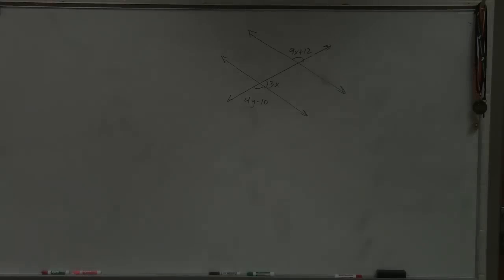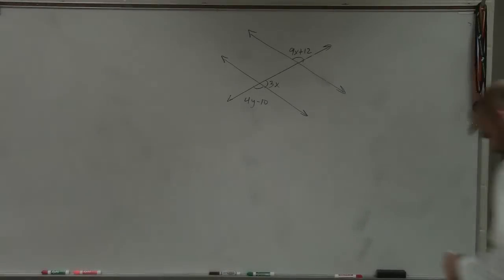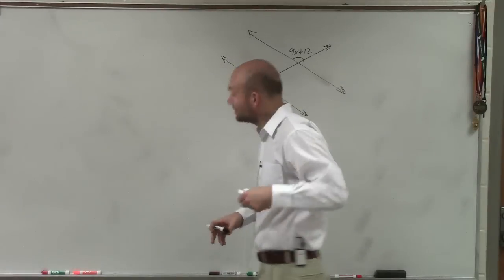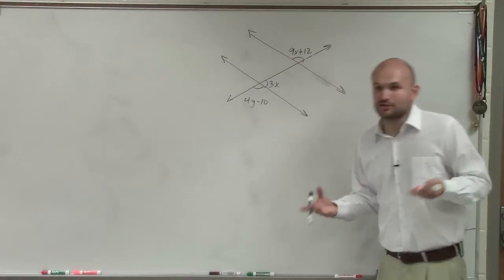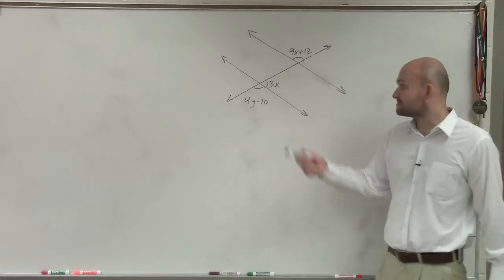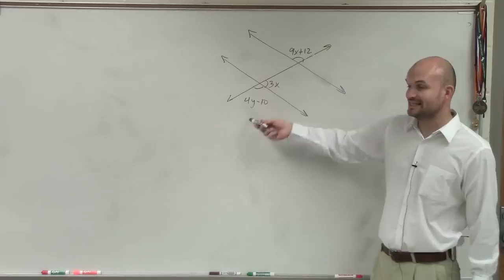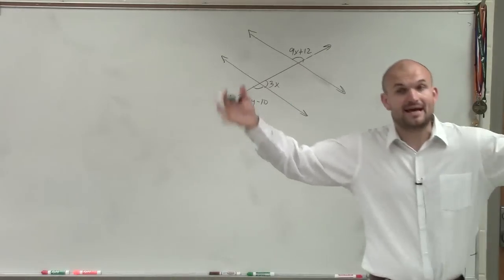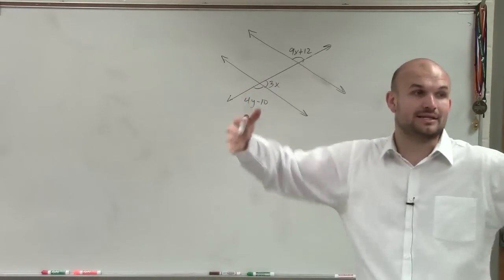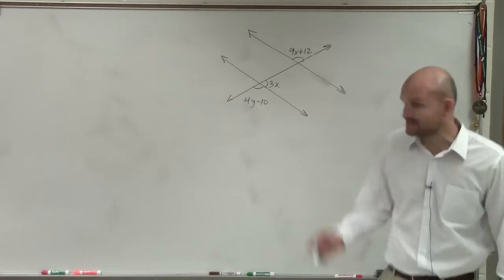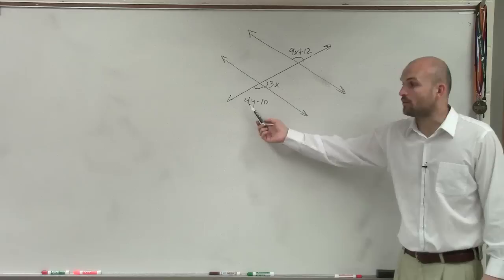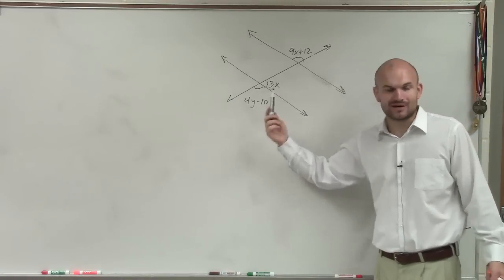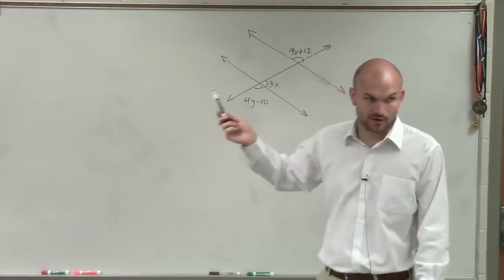This one gets a little confusing. The reason why it's a bit more confusing is, first of all, let's look at our angle relationships. We know that these two angles are supplementary — they make up a line, they're a linear pair. But the problem is, this one has a y and this one has an x, so saying they're going to add up to 180 is just not going to work.